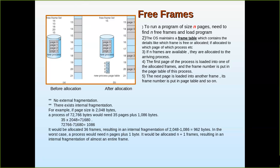If a new user process arrives with four pages, there must be four free available frames in the main memory. One more strict rule in paging is that the whole of the user process must be available in the main memory for it to be executed.